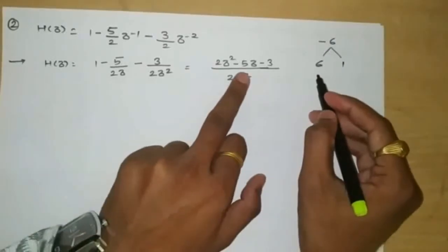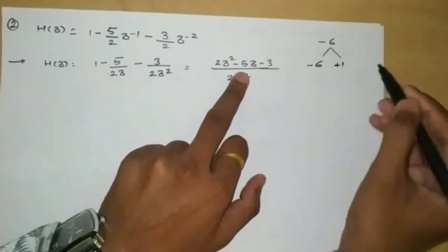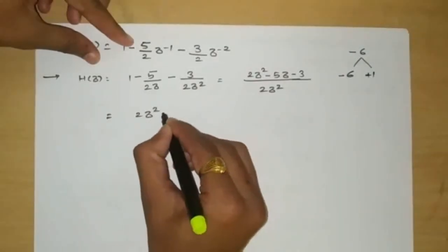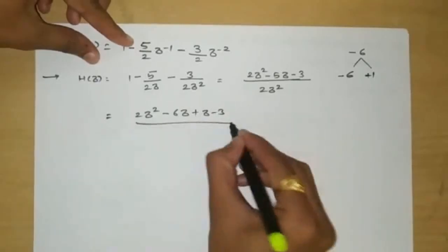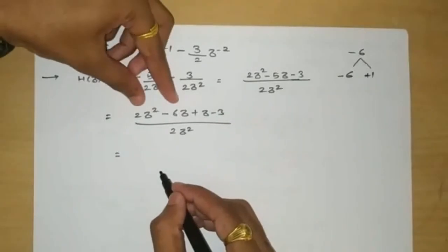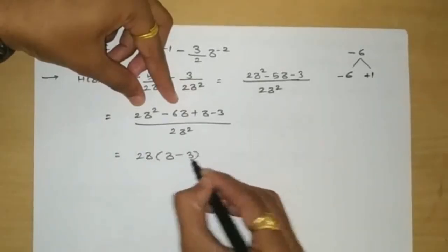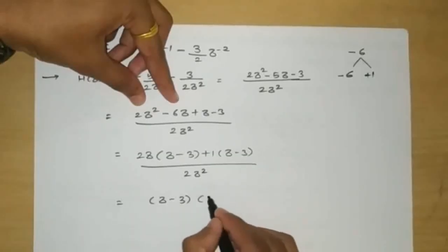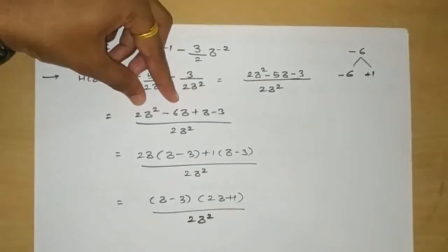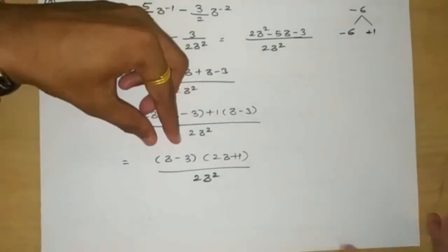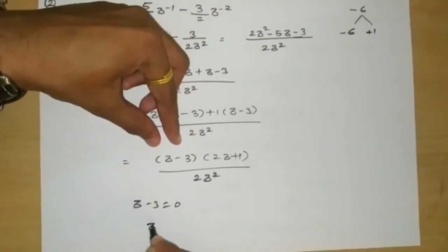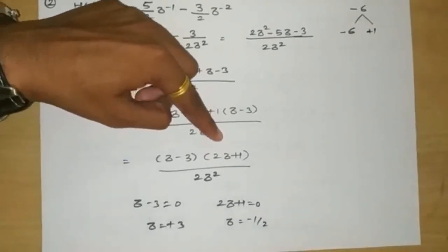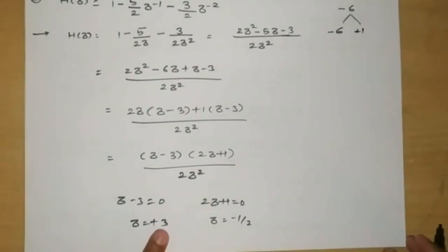Again, this is a quadratic form. We find roots of 2 × (−3) = −6 such that their sum is −5. The factors are −6 and +1. This gives 2z² − 6z + z − 3 = 2z(z − 3) + 1(z − 3) = (z − 3)(2z + 1), over 2z². Setting z − 3 = 0 gives z = +3, and setting 2z + 1 = 0 gives z = −1/2.